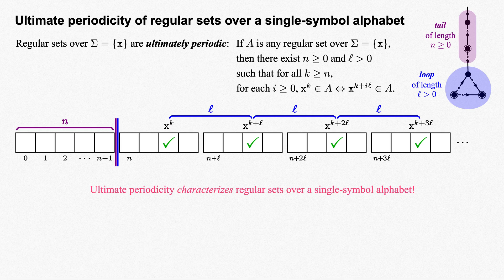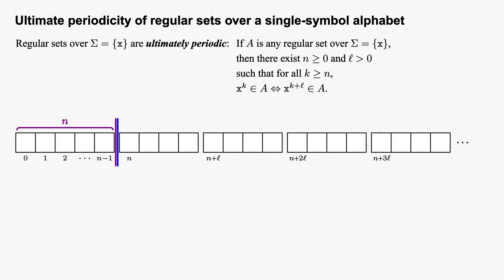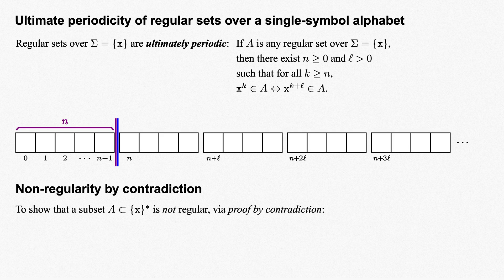In fact, this property of ultimate periodicity characterizes regular sets over a single symbol alphabet. A set over x is regular just when it has this property. We can use ultimate periodicity to show that certain subsets of x star are not regular via proof by contradiction as follows. Given a subset A of sigma star that we want to show is not regular, suppose to the contrary that A is regular, which allows us to conclude that some fixed n greater than or equal to 0 and L greater than 0 exists with the above properties.